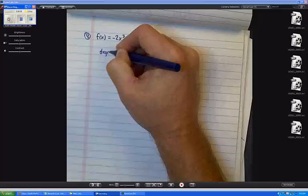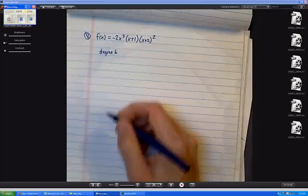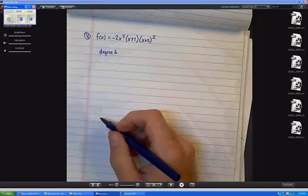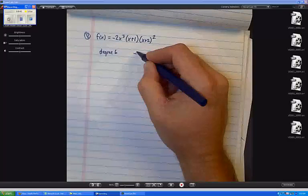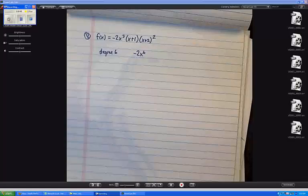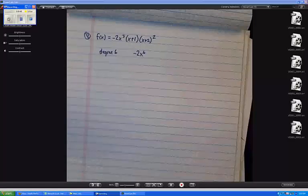Okay, that wasn't the question. The leading term, I guess, would be negative 2x to the 6th. You can see that, right? Even without me multiplying it all out. If you multiply it out, you'll see it also.